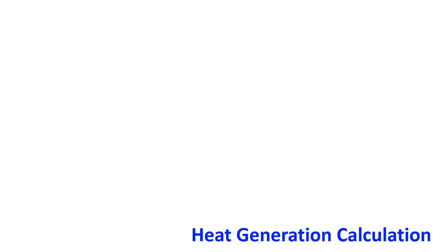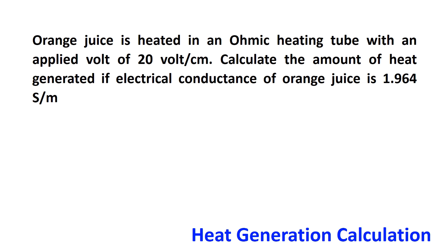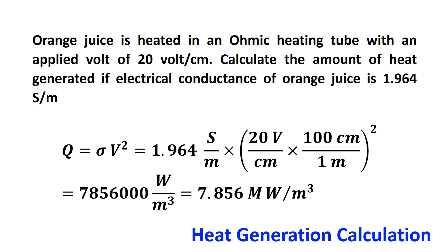For a heat generation calculation example: orange juice is heated in an ohmic heating tube with an applied voltage of 20 volts per centimeter. We calculate the amount of heat generated if the electrical conductivity of orange juice is 1.964 Siemens per meter. Heat generation inside the ohmic tube is Q equals sigma times V squared, which equals 1.964 S/m times (20 V/cm times 100 cm/m) squared, giving 7.856 megawatts per cubic meter. This heat is expressed per unit volume.